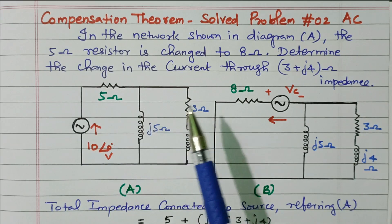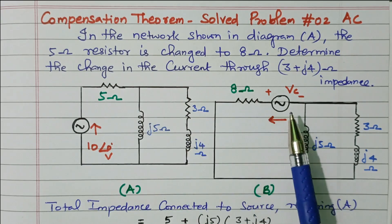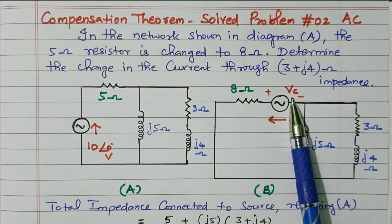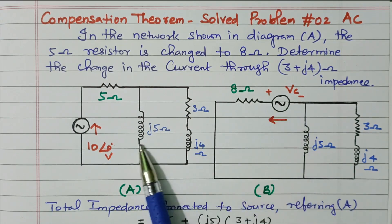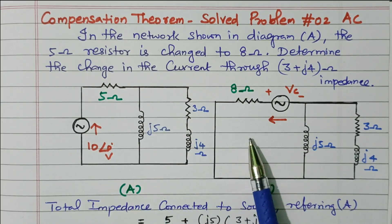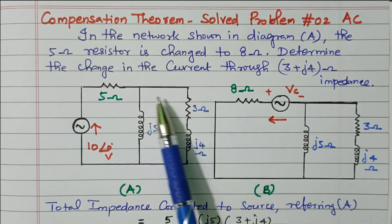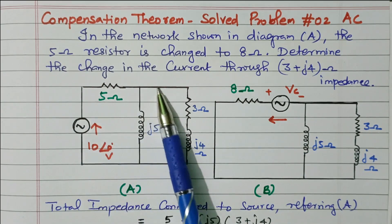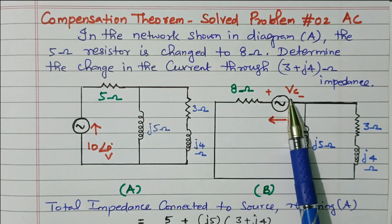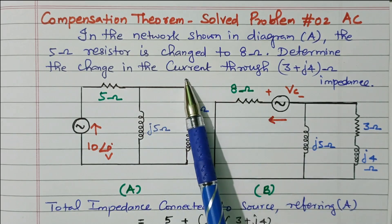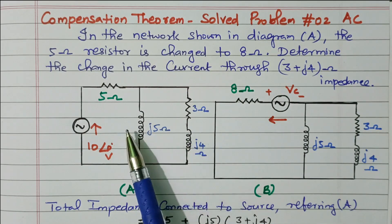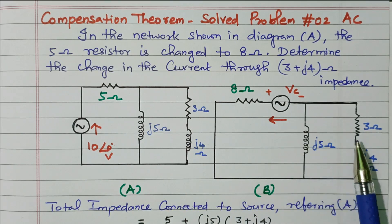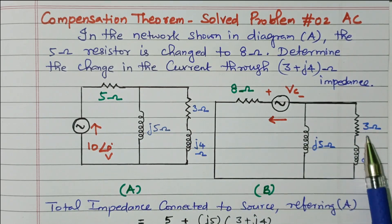In the original circuit, the resistor is changed. Due to that, there is an opposing voltage given by compensation voltage Vc. This Vc can be calculated as I into delta R. I is the current in the original circuit and delta R is the change in resistor. So the first step is to find what is the current in the original circuit, so that we can find Vc. We also need to find the current through the 3 plus J4 ohm impedance.